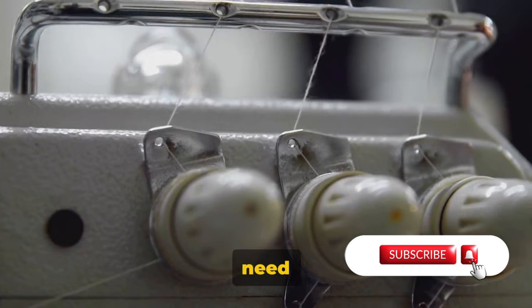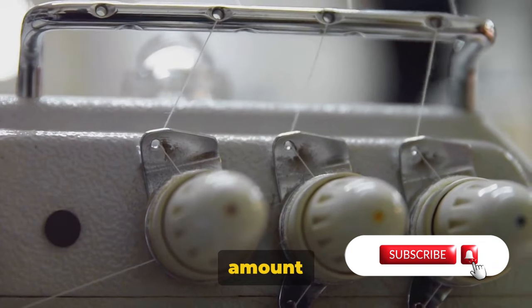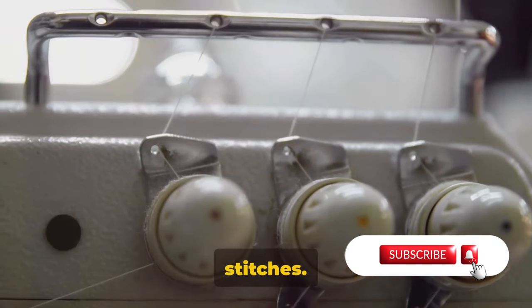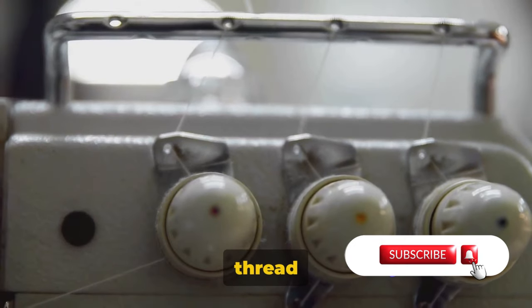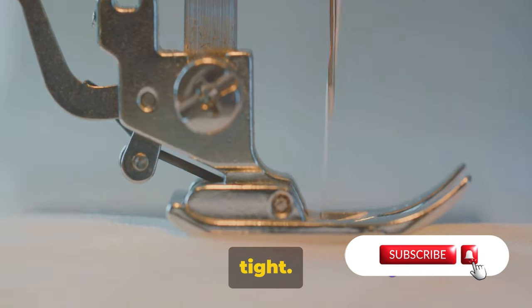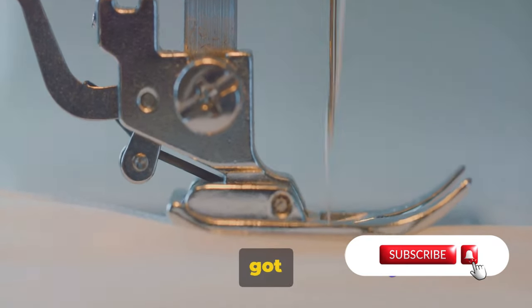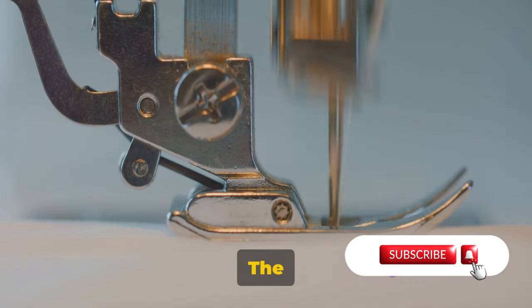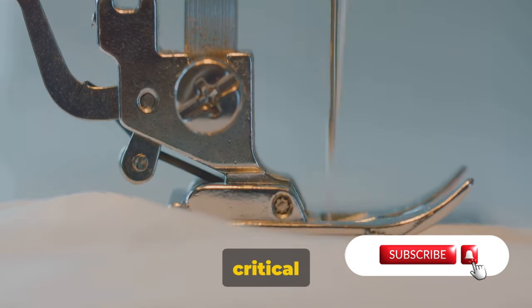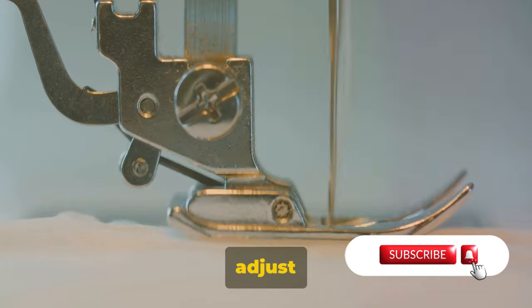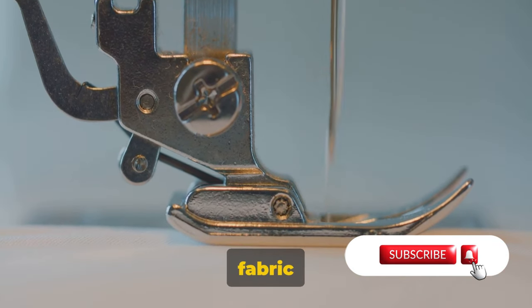The top thread and the bobbin thread need to interlock with just the right amount of tension to form neat, even stitches. Too much tension and the thread may break or the stitches become too tight. Too little, and you've got loose, messy stitches. The tension discs provide that critical control, allowing you to adjust the tension to suit different types of fabric and thread.